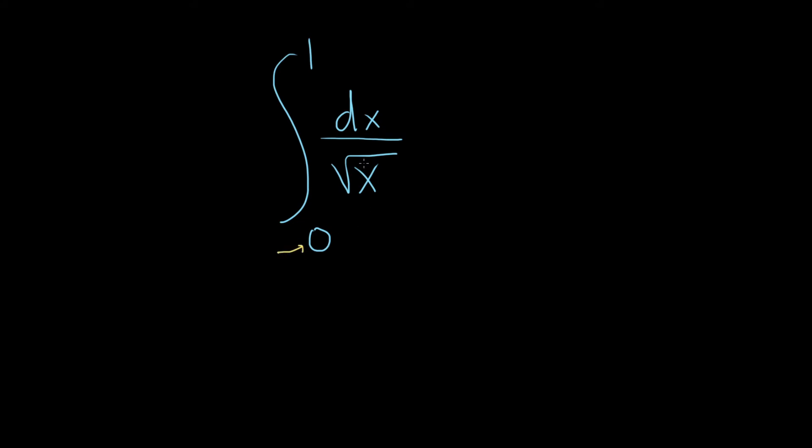If you take zero and you plug it in, you end up getting division by zero. So there's what's called an infinite discontinuity at zero. That's what makes it improper.